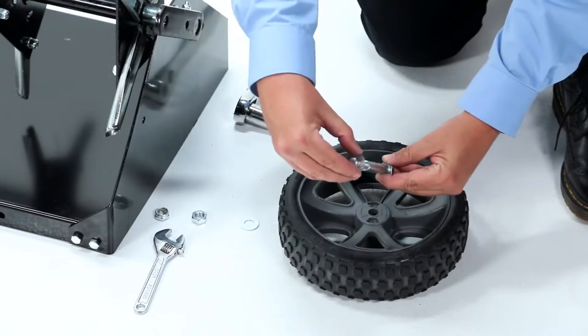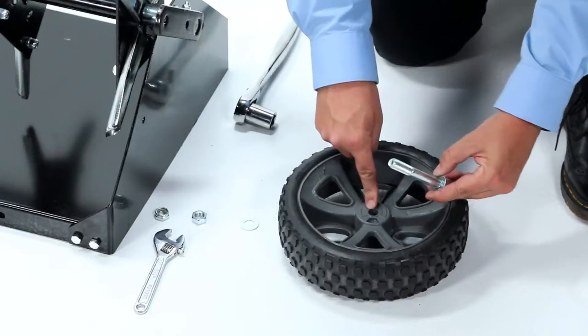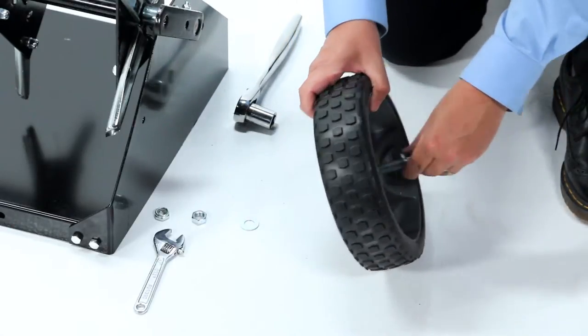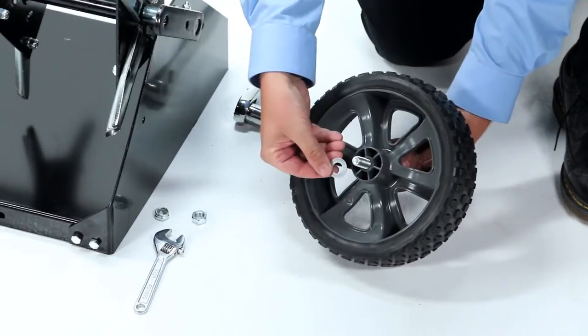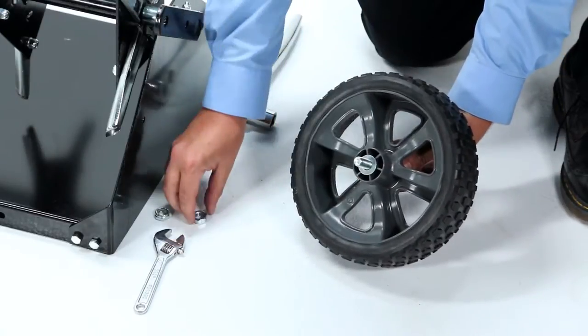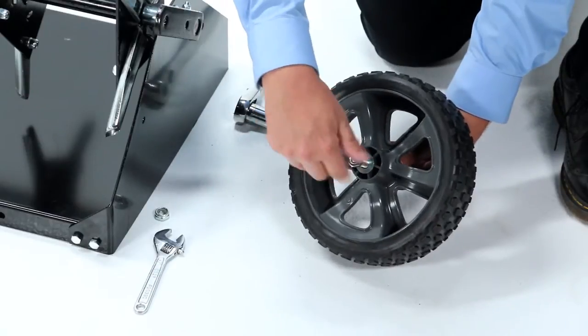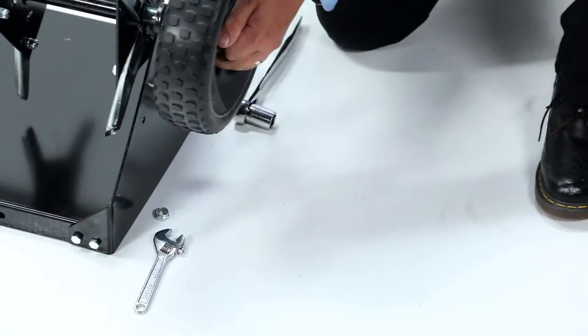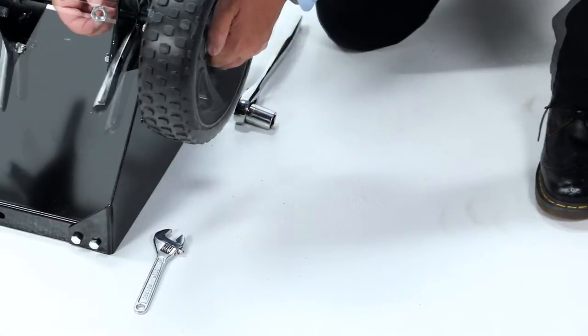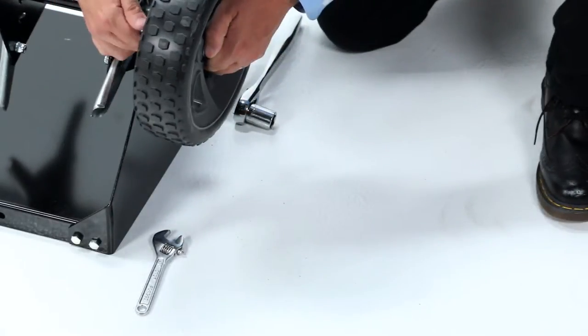Next, attach a wheel part 12 to each wheel bracket as shown with a half inch by three and a half inch hex bolt part A, two half inch washers, a half inch hex jam nut part L, and a half inch nylock jam nut part H.